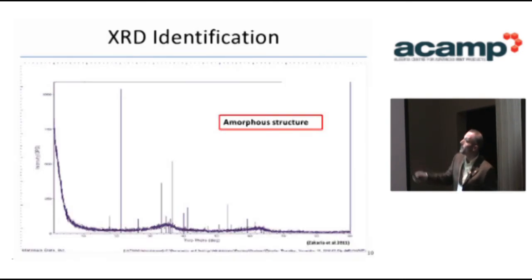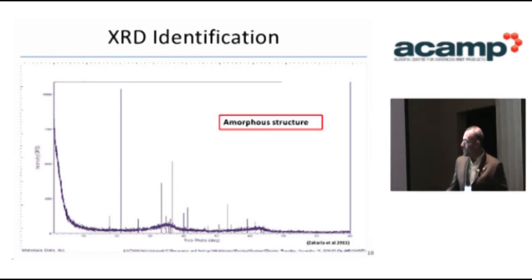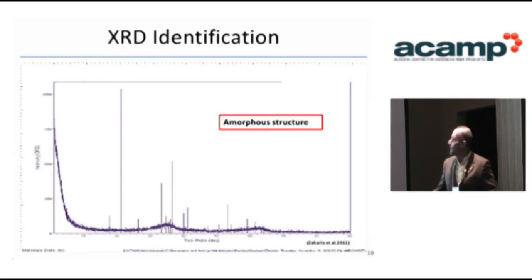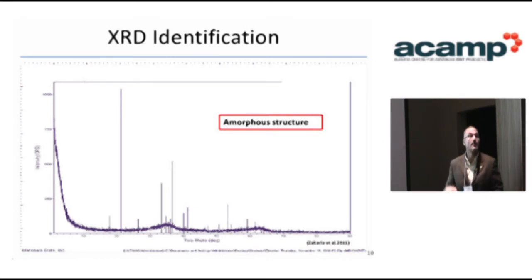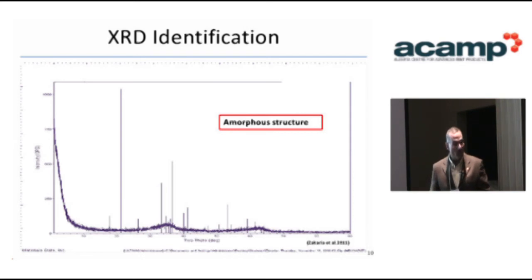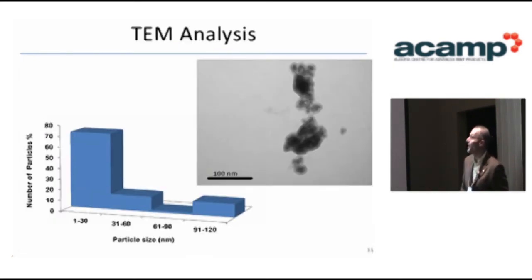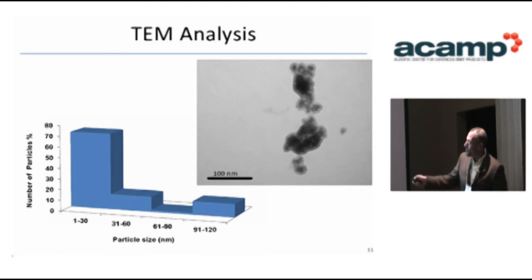We took the nanoparticles formed using one of the methods and characterized them. The XRD output — X-ray scattering — showed that the particles had an amorphous structure, and we've seen the same XRD fingerprints in the literature for the same particles, so we were comfortable that we had formed the right particles. Looking at them through the microscope, most of our particles are in the nano domain, 1 to 30 nanometers, with most at the lower end.